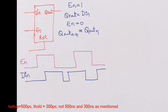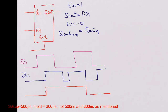Now if you plot Q out, it would look like this. Assume it was starting at low. Q out follows DN — it goes high because enable is high and DN goes high, and then it remains high till this point, then it falls. When enable is high the DN changes. This particular transition of DN is never seen by Q out because it happens when enable is low.